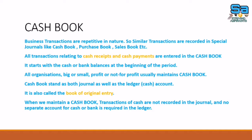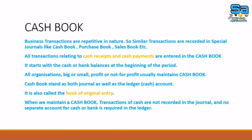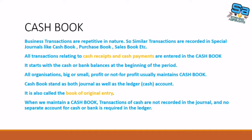This is one of the popular books maintained by organizations, whether big or small, profit or non-profit. It is called the book of original entry. Moreover, the cash book acts as both the journal and the ledger of the organization. When a cash book is maintained, there is no need to maintain separate books related to cash or bank transactions. Let us check the types of cash book.